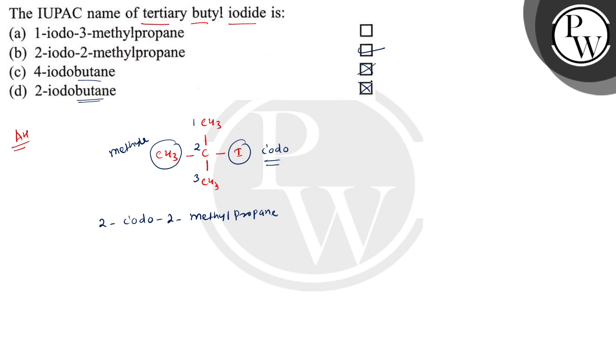The first option is 1-iodo-3-methylpropane. This is not possible here because the numbering should be done properly. The numbering will contain the maximum number of carbon atoms to form the long chain, and in this case it is propane.